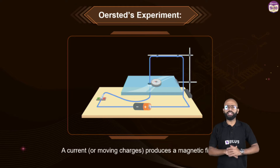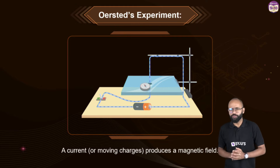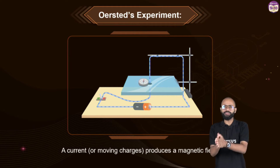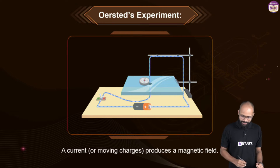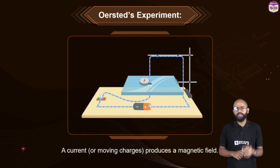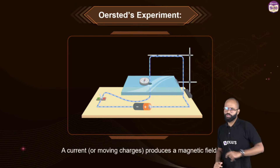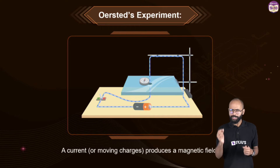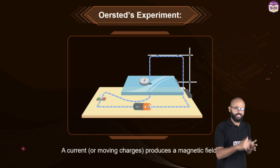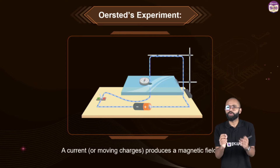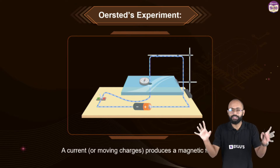Let's start with a small experiment that proved electricity and magnetism are connected — Oersted's experiment. Hans Christian Oersted found that when a current-carrying wire is placed next to a compass, you see deflection in the compass needle, which means current produces a magnetic field.